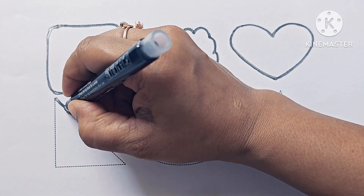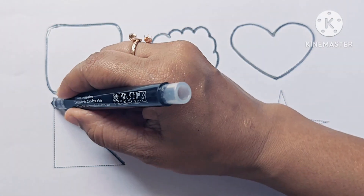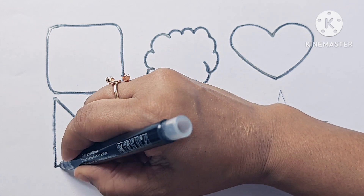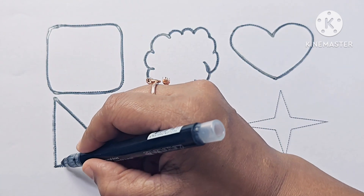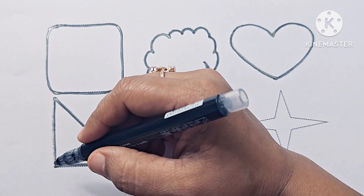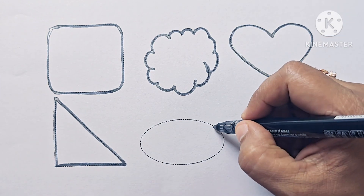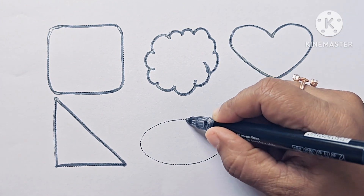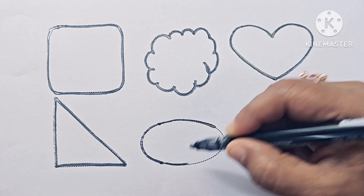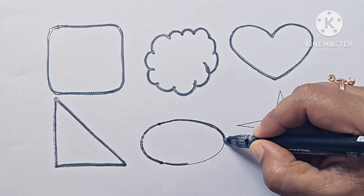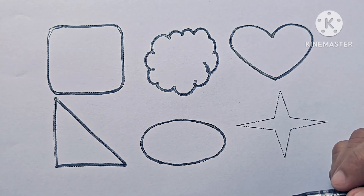This is a right-angled triangle. It has three sides and three angles, whereas one angle is 90 degrees. This shape is oval.